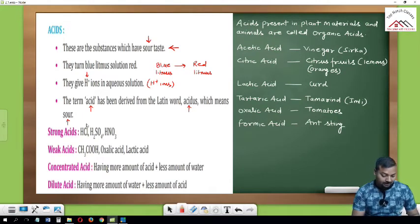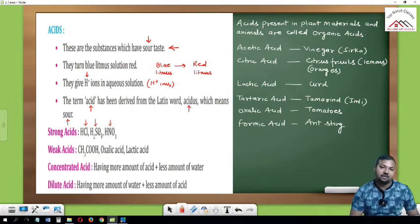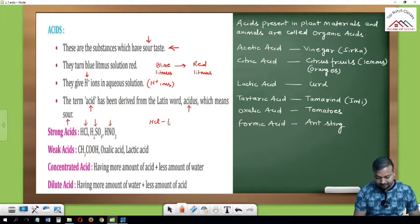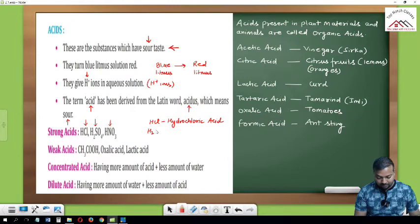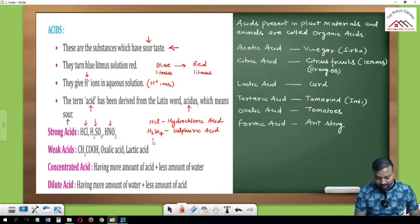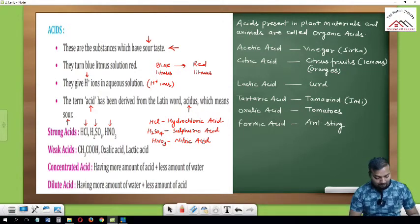Strong acids: examples are HCl — hydrochloric acid, H2SO4 — sulfuric acid, and HNO3 — nitric acid. These are the three examples of strong acids.